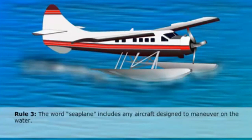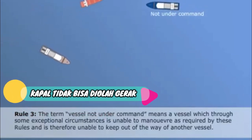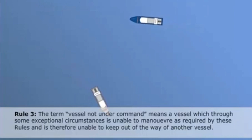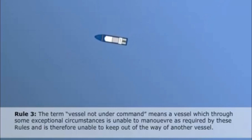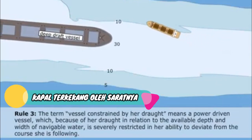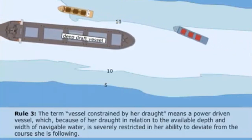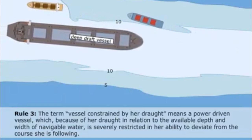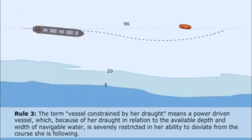A 'vessel not under command' means any vessel which, because of some reason, cannot keep out of the way of other vessels. The reasons are normally beyond its control, such as main engine breakdown where she cannot anchor, steering failure, or launching a rescue boat. 'Vessel constrained by her draft' is a power-driven vessel which, because her draft in comparison to the depth of water at that place is so great, she cannot alter course to avoid a collision — if she does so, she would run aground.